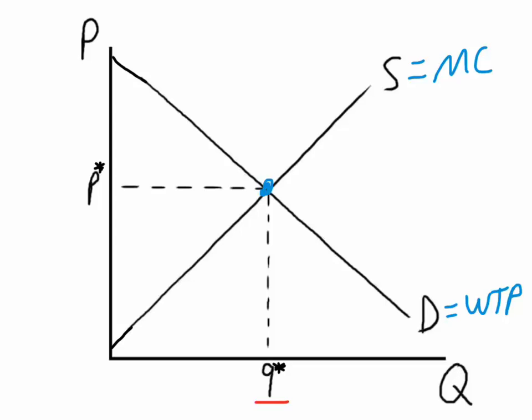At this quantity, Q-star, the market provides all the units up to Q-star for which the benefits are greater than the costs, and none of these units above Q-star where the costs outweigh the benefits.